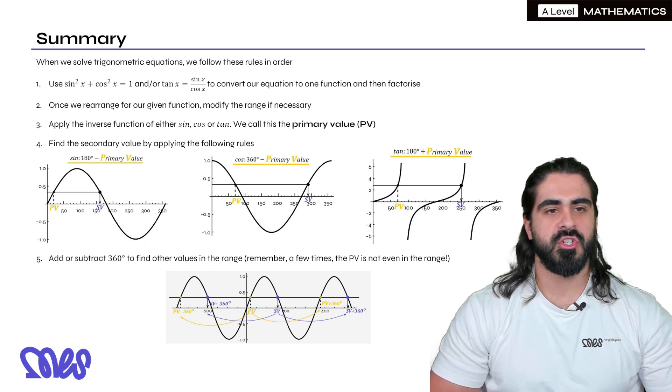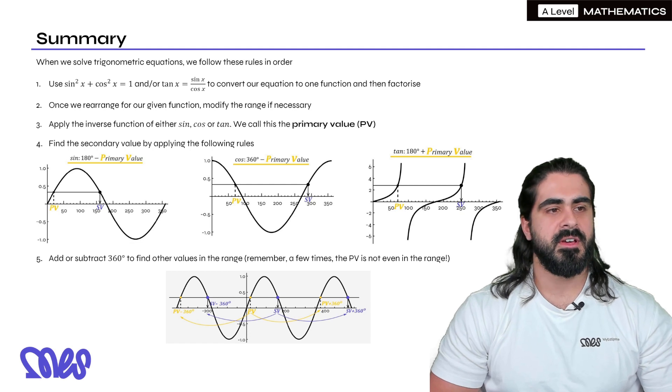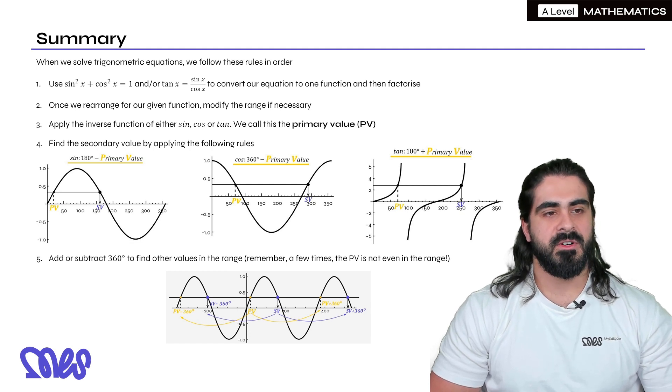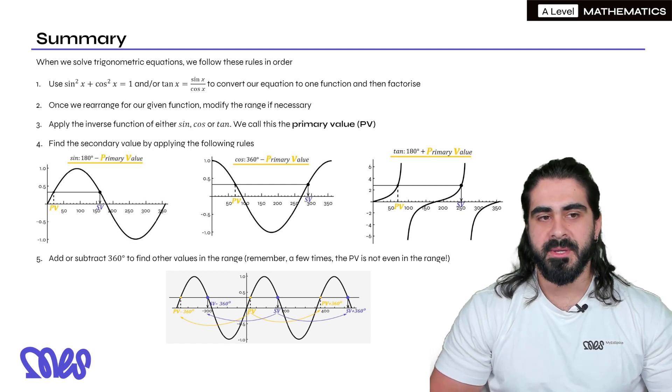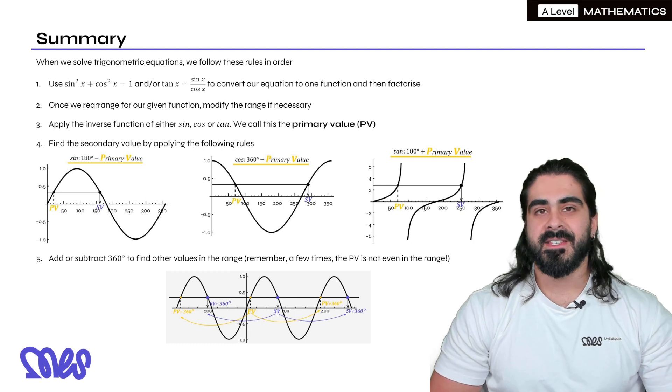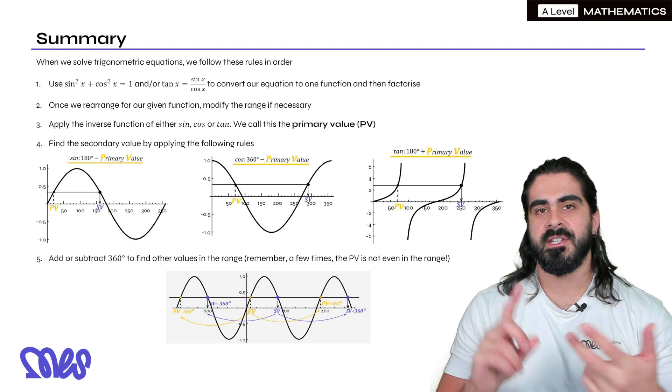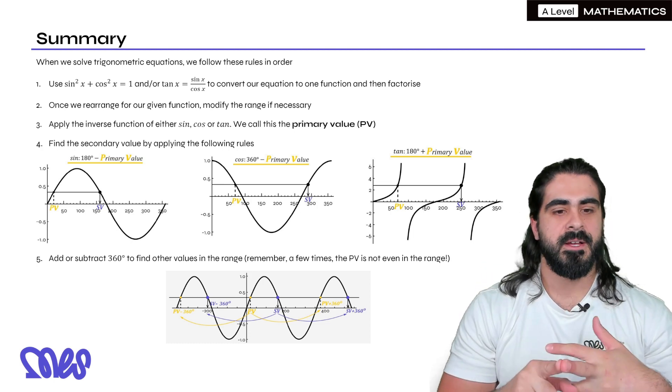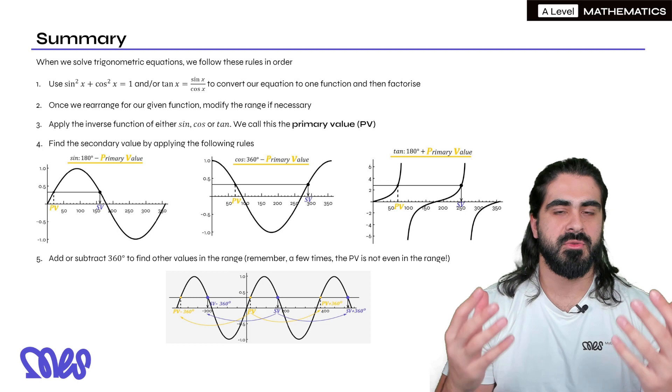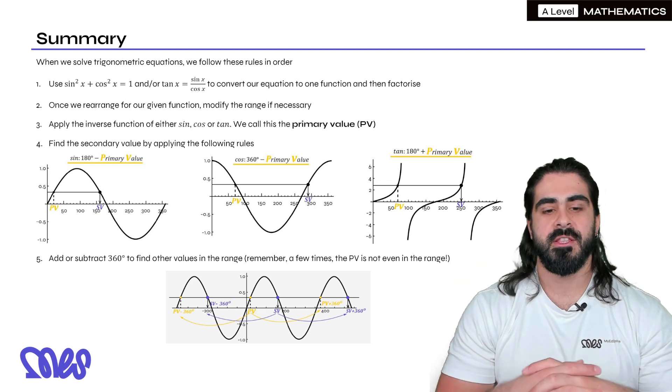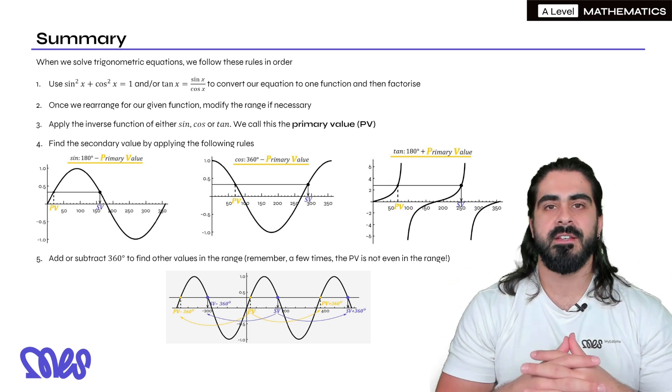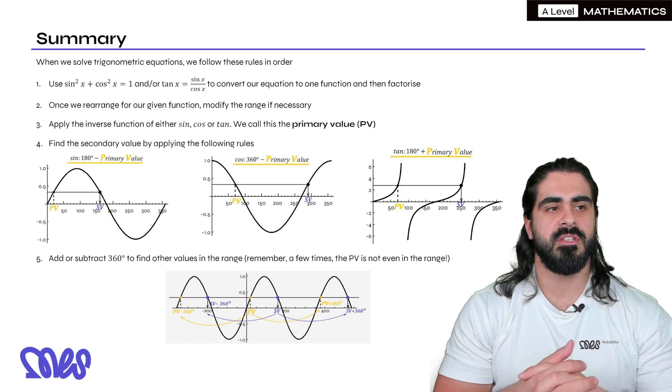Once we rearrange our given function, modify the range if necessary, apply the inverse function to either sine, cos, or tan. We call that the PV. Find the secondary values by sine 180 minus, cos 360 minus, tan 180 plus. Remember, they don't change. Then once we've done that, we add or minus 360 to find other values in the range, and you unmodify the range at the very end if you did modify the range in the beginning.